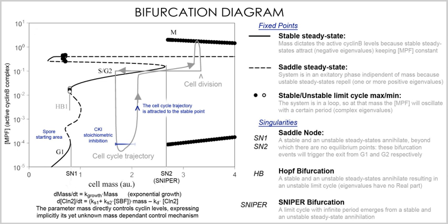In evolutionary game theory, developed first by John Maynard Smith and George R. Price, selection acts directly on inherited phenotypes without genetic complications. This approach has been mathematically refined to produce the field of adaptive dynamics.